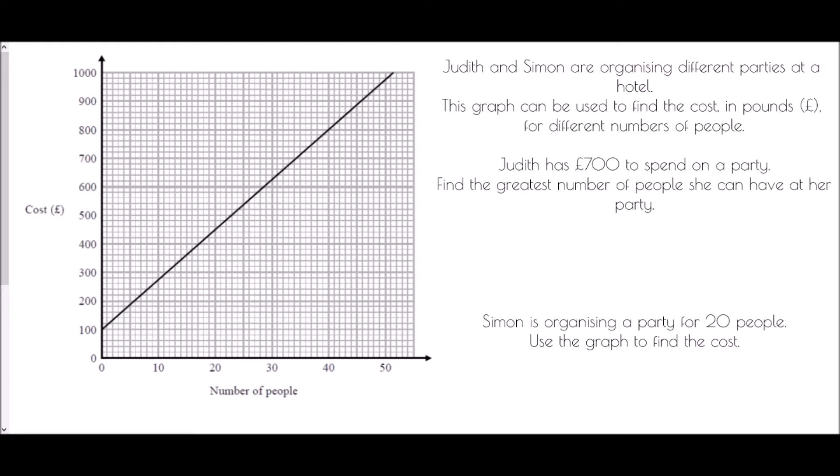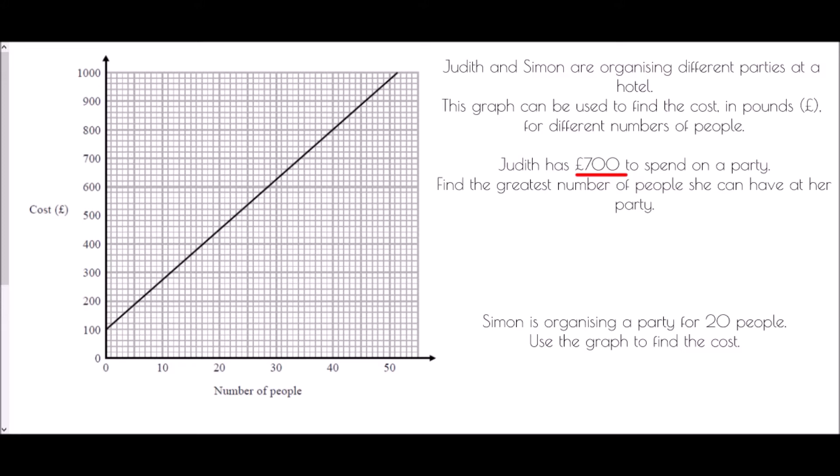When using a conversion graph, we need to think about straight lines which we can draw onto the graph and read values from. I'm going to draw a line from £700 because that's what we have to spare. Draw straight across from 700 until it hits the conversion graph, then from that exact point draw down. Reading off the value, the number of people looks like just a little bit more than 34. But the key is it was the greatest number of people she can have at her party. Even if the answer was 34.2, I couldn't have 34.2 people - it's 34 people maximum.